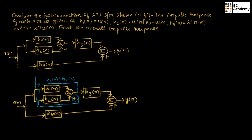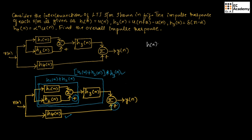Now, these two impulse responses are in cascade form. So, we can write H1 of n plus H2 of n, and that will be convoluted with H3 of n. Now, these two systems are in parallel with a plus sign. Therefore, the overall impulse response we can write as H of n is equal to H1 of n plus H2 of n, convoluted with H3 of n, plus H4 of n.